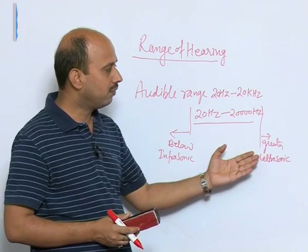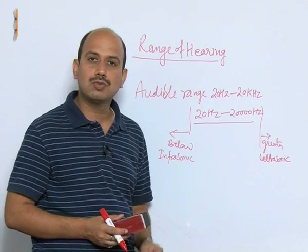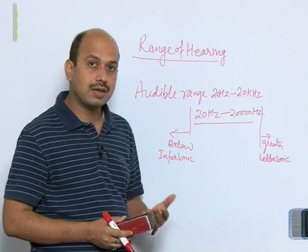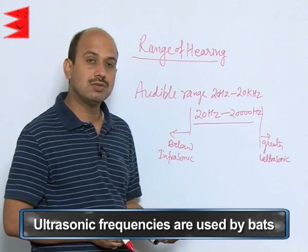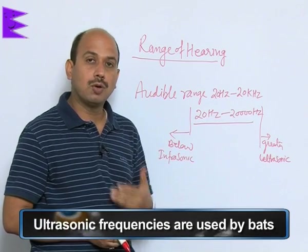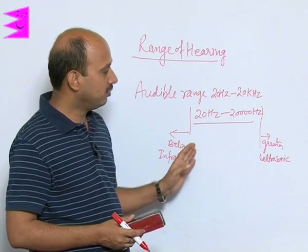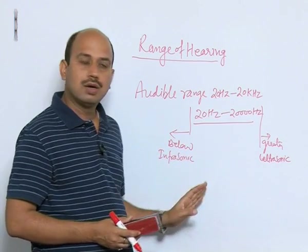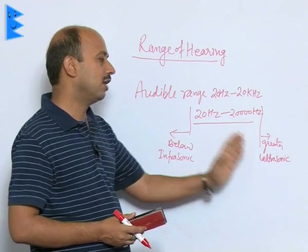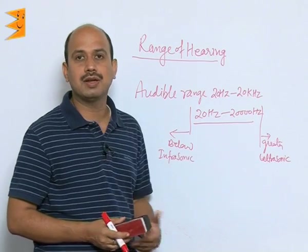Ultrasonic frequencies are very high frequencies — they are beyond 20,000 hertz, that is 20 kilohertz. These frequencies are used by some animals like bats, who use them to gauge the distance of obstacles or their prey. So these frequencies we are not able to hear, but animals can use both infrasonic and ultrasonic frequencies. Different frequency ranges are used by different animals.